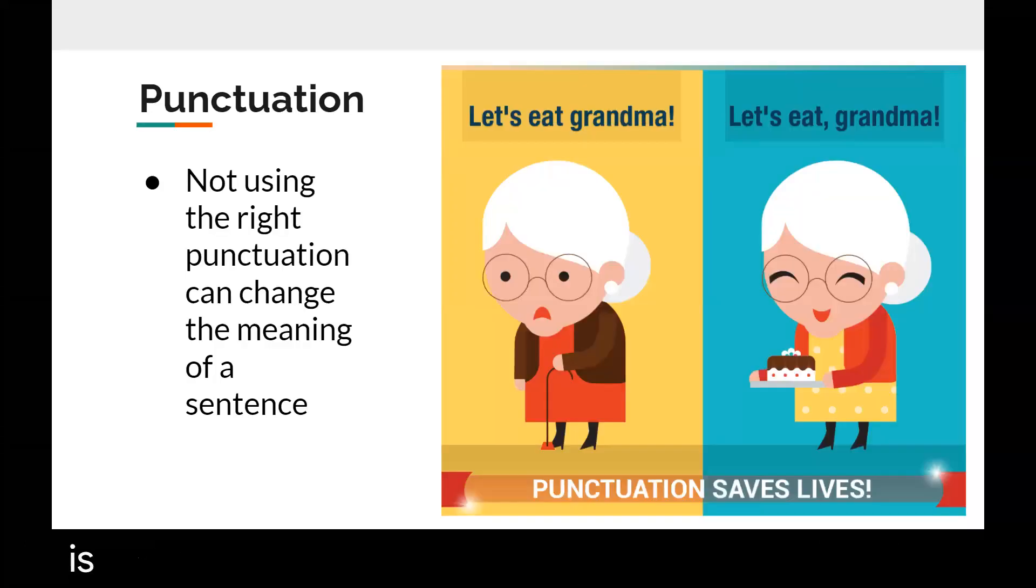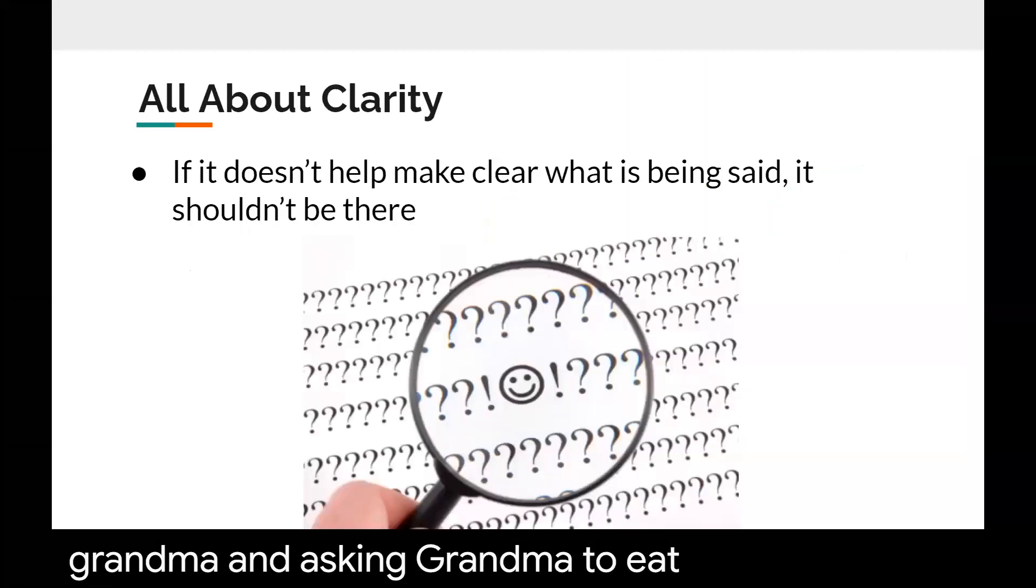Punctuation is really important in writing. Not using the right type of punctuation can completely change the meaning of your sentence. It's the difference between eating grandma and asking grandma to eat. Punctuation with AP Stylebook is all about clarity. If it doesn't make the sentence more clear, then it's likely that punctuation should not be there, so always remember that you're seeking clarity when using punctuation.